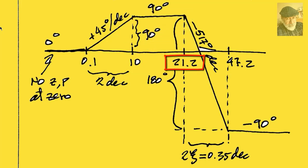Up to the next corner, at 21.2, where it takes a steep dive of negative 517 degrees per decade, down to the last corner at 47.2 radians per second, in which it flats out again.